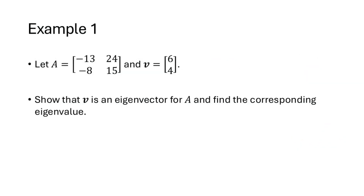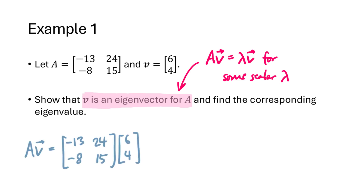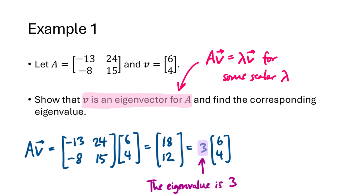Let's look at an example. We have a 2 by 2 matrix A and a vector V, and we want to show that V is an eigenvector for A and find the corresponding eigenvalue. We multiply A times V — going across the rows of our matrix and down the entries of our vector. We get the result 18, 12, which is 3 times the original vector 6, 4. So Av equals 3V, which means V is an eigenvector for A corresponding to the eigenvalue 3.